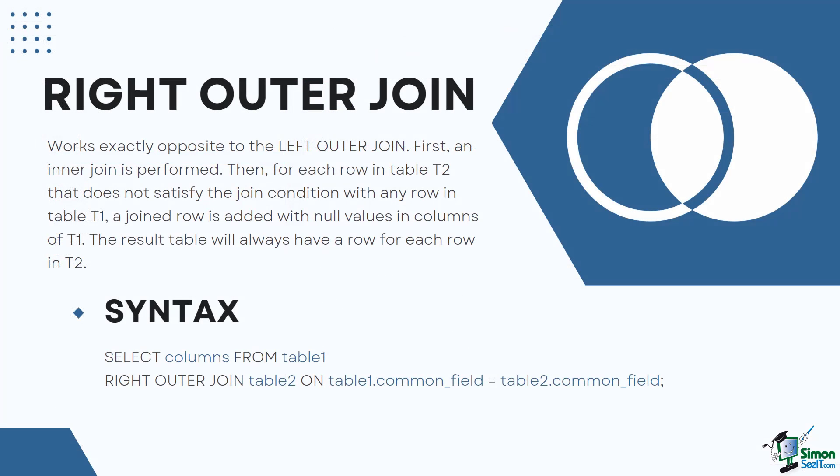The right outer join works exactly opposite to the left outer join. First, an inner join is performed. Then, for each row in table 2 that does not satisfy the join condition with any row in table 1, a joined row is added with null values in the columns of T1. This is the converse of a left join — the result table will always have a row for each row in T2. As shown in the diagram, it outputs all records from the right table regardless of whether they have a matching record. The syntax is: SELECT columns FROM table1 RIGHT OUTER JOIN table2 ON table1.common_field = table2.common_field;